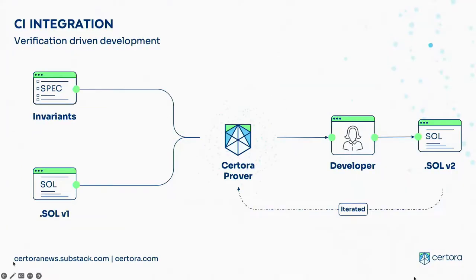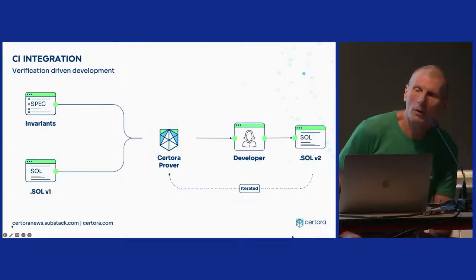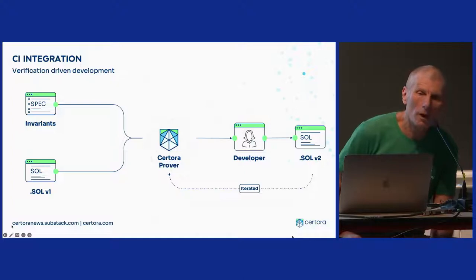The tool integrates into your build like a developer's tool. It integrates into CI software like Git or CircleCI. Every time you change the code, assuming the invariants are the same, you run the tool again. You can call it on the cloud, and basically every time we make sure that when you upgrade the code, the code remains correct.